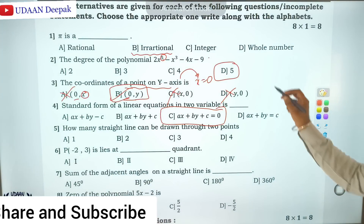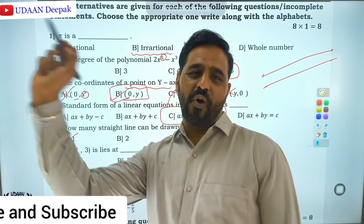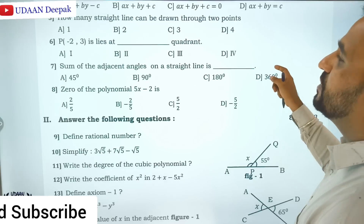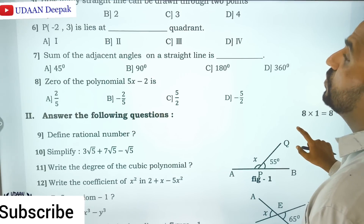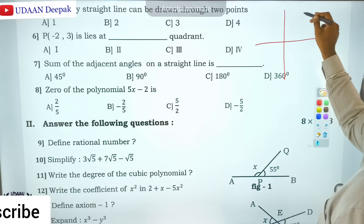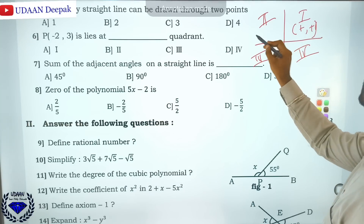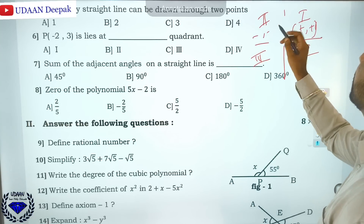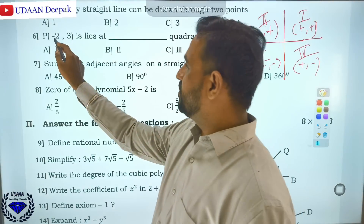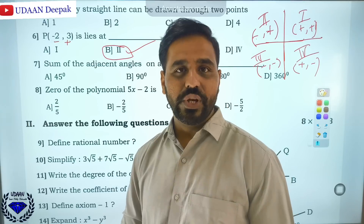Then how many straight lines can be drawn through two points? From two points, you can draw only one straight line, so the answer is 1. Next, point P(−2, 3) lies in which quadrant. In the first quadrant both are positive; second quadrant x is negative, y is positive; third both negative; fourth x positive, y negative. Since x is negative and y is positive, the answer is option B — second quadrant.